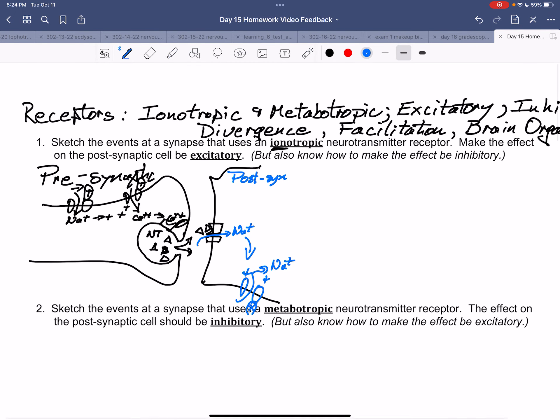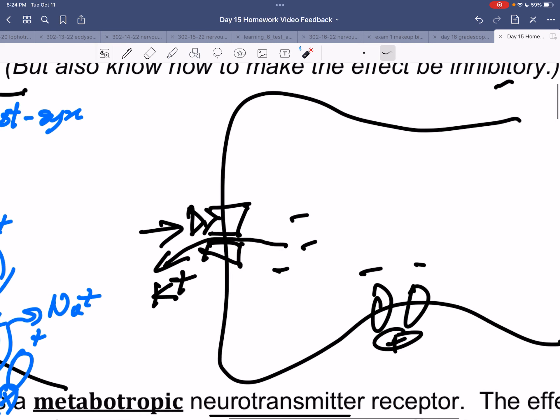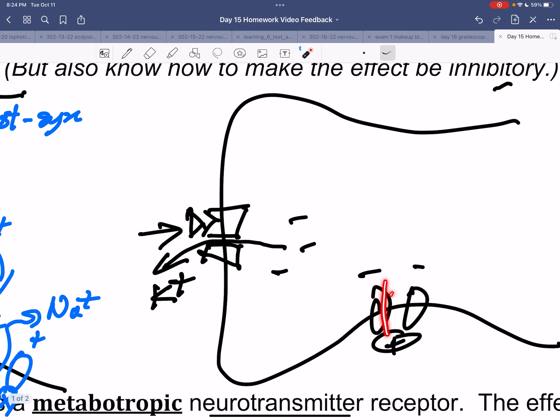That was the first one. How would we make it inhibitory? If it was inhibitory, then our postsynaptic ionotropic receptor would either be a potassium channel. Potassium would leave, making the inside more negative. That makes an action potential less likely, and it would make it harder to get to the threshold of minus 45. And so it would be harder to get a new action potential.